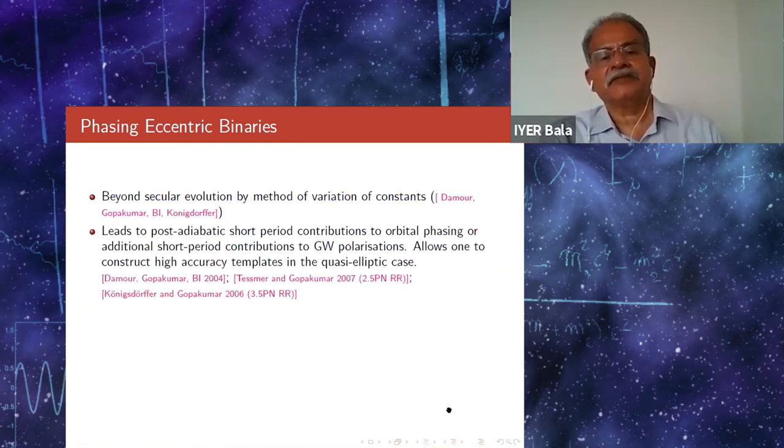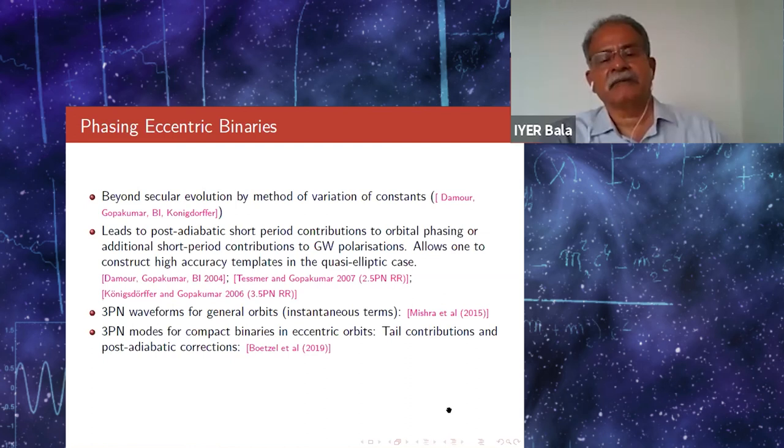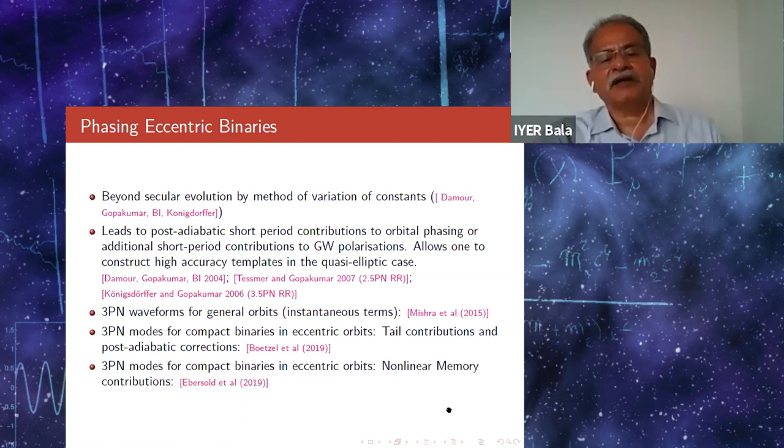So after finishing the quasi-circular case, we looked at the quasi-elliptic case. Once the phasing is available in terms of the variation of the orbital elements, one wants to know what the waveforms look like. This was next looked at by my last student, Mishra, who looked at the instantaneous terms in the general orbits. The tail terms required much more work. It's only in 2019 with colleagues in Switzerland we could complete the tail contributions. So essentially, we have the tail contribution, the post-adiabatic corrections, and finally we could also calculate all the nonlinear contributions for the eccentric terms.